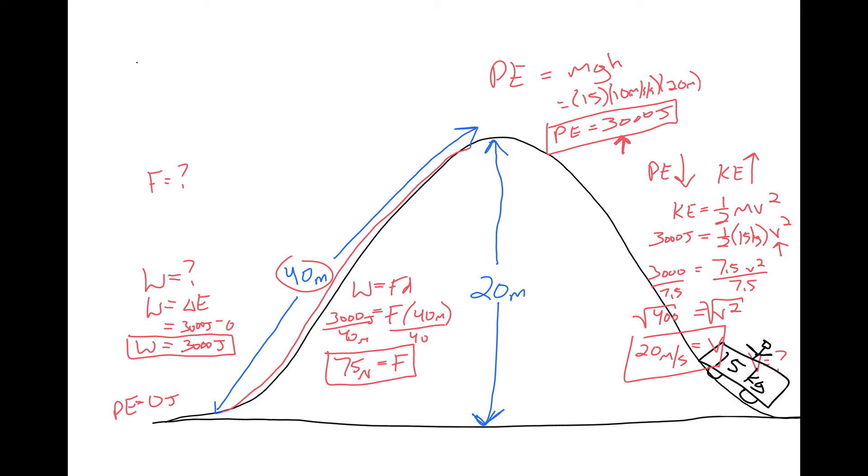We calculated that first, and actually went backwards to find the work. Then it went careening over the hill, turning potential into kinetic, and at the very bottom, it'd be going 20 meters per second if all of the potential turned into all of the kinetic.